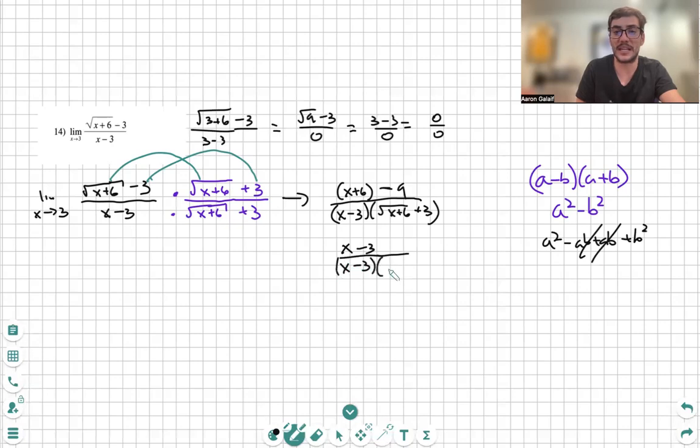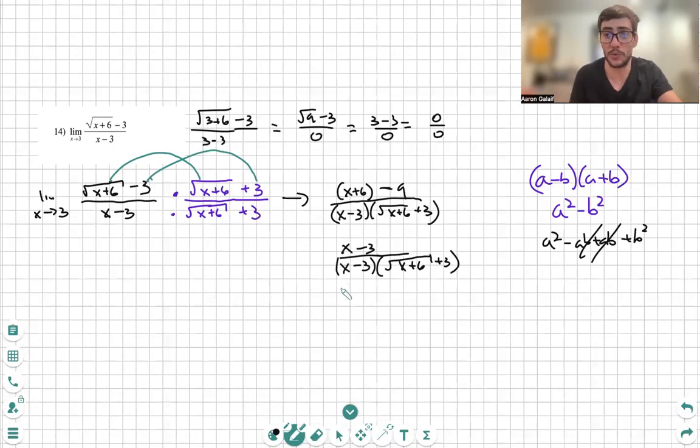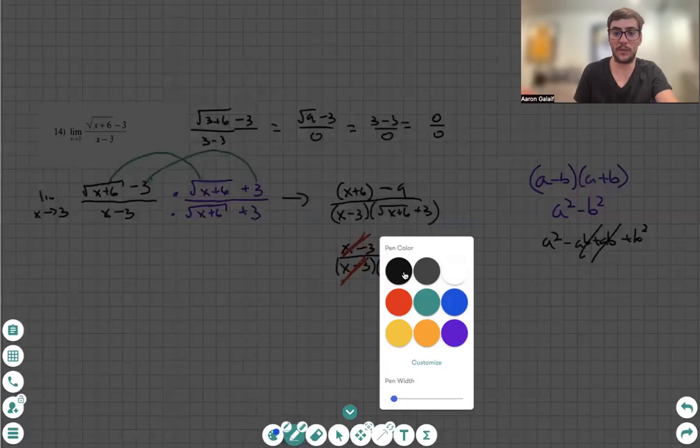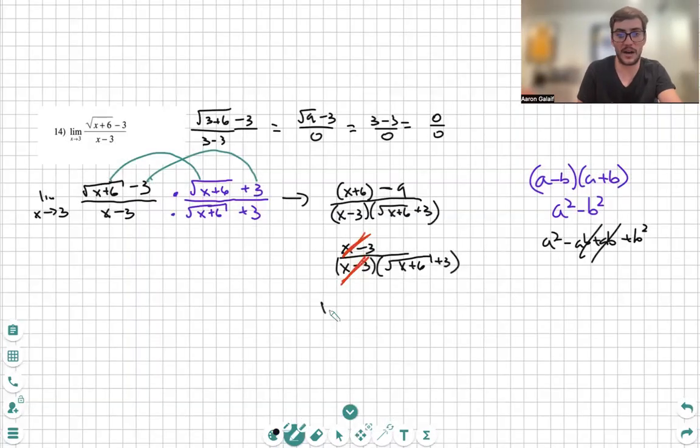Well, what I see is I see a binomial, I believe that's what that's called, a binomial on the numerator and the denominator that is exactly the same. I can now cancel that. We will rewrite what we have. Limit of x approaches 3 of 1 over square root of x plus 6 plus 3.